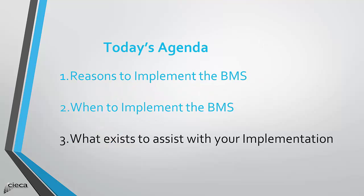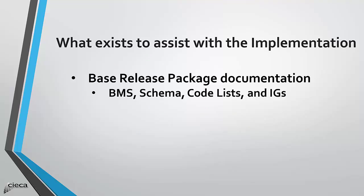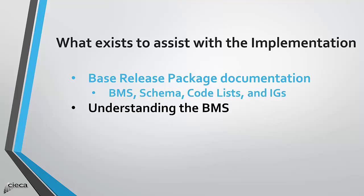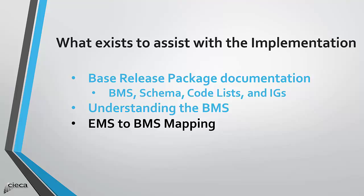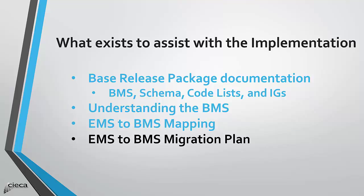So, what does CECA have for you to assist in your implementation? Besides the base documentation contained in the release package — the BMS, the schemas, the code lists, and the implementation guides — there are three documents to assist you. First, Understanding the BMS, which provides a high-level description of all the Business Message Suite messages. The next document is the EMS to BMS mapping, which provides a one-to-one, step-by-step mapping of all the individual data elements. And lastly, a document describing a plan to migrate from the EMS to BMS in an orderly manner. CECA knows that each company has its individual characteristics and environment. The documents provide a framework to accomplish a successful implementation.